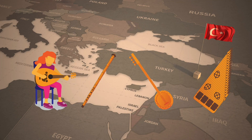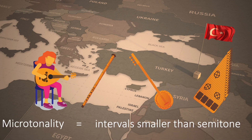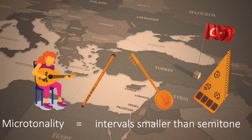Turkish music, by contrast, is microtonal. This is because it uses intervals that are even smaller than a semitone, or the distance between two keys on the piano or frets on the guitar. So if there are intervals that are smaller than a semitone, how do we find them? And how do we play them if we can't use a piano or a guitar for reference?